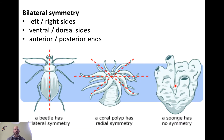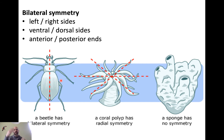The first concept we need to know is bilateral symmetry, and this figure does a good job of explaining that. You and I have bilateral symmetry, which means we have a left and a right side, a ventral and a dorsal side — another way of saying front and back — and we also have anterior and posterior ends. We have heads and butts.